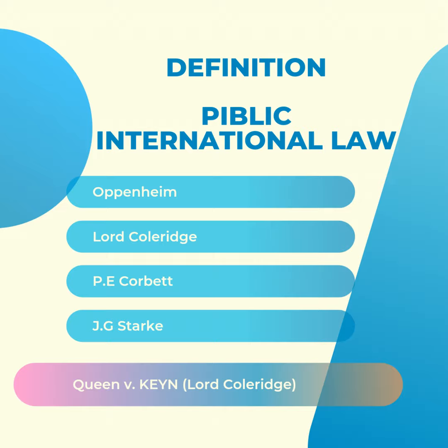Lord Coleridge, Chief Justice, defined international law as the law of nations — that is, the collection of usages which civilized states have agreed to observe in their dealings with one another. In earlier days, at the initial stage, these 'civilized states' referred to the Western countries, but now more globally all states are considered civilized states.